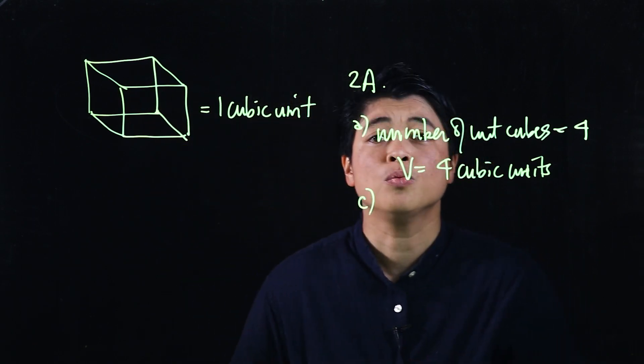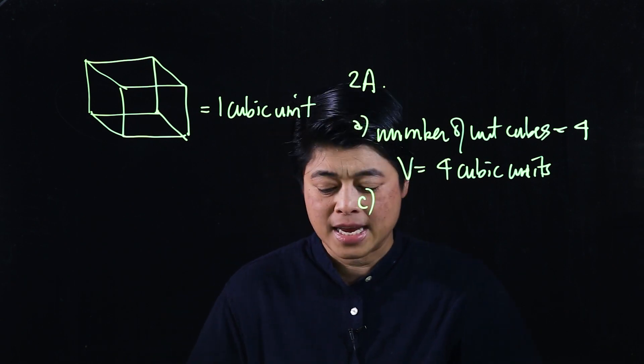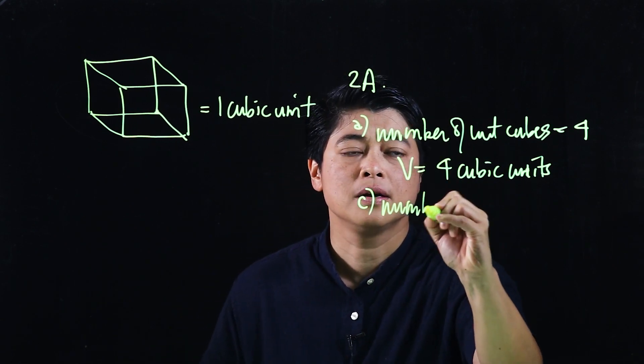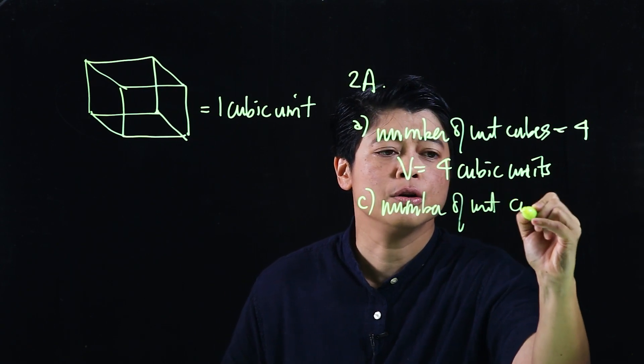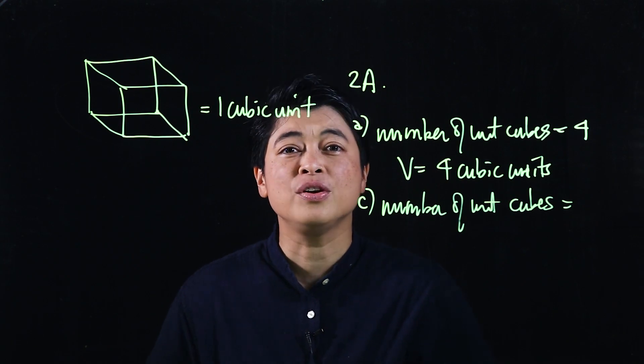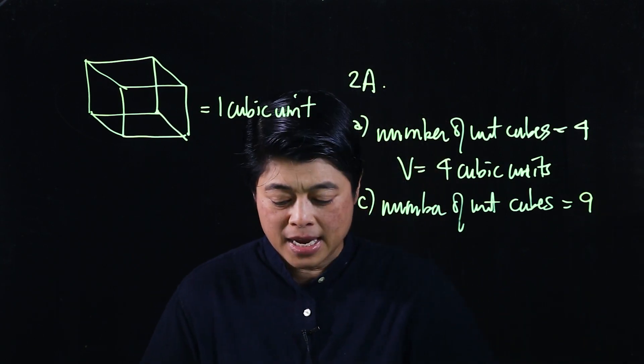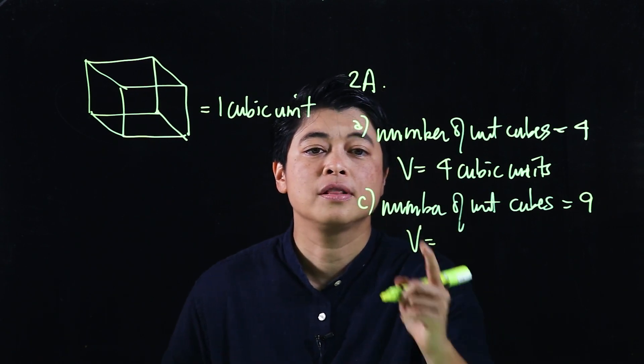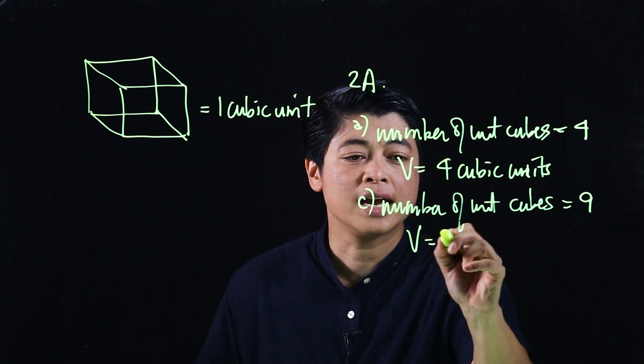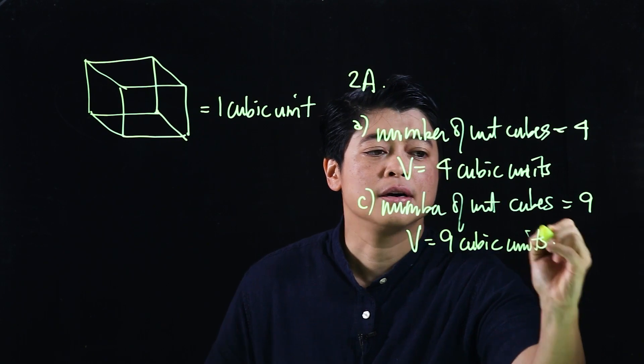Because one cube is equivalent to one cubic unit. Looking at letter c, it asks the same thing — number of unit cubes. If we count them, there are nine, which means the volume of the solid is nine cubic units. This is a fairly simple lesson; kids just need to count the cubes, being careful about hidden ones. That concludes lesson one of chapter eight — see you in the next lesson.